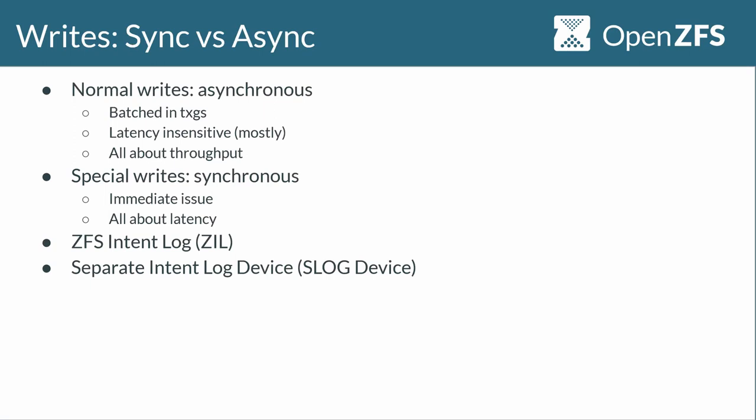Normal writes when you're dealing with software are what you would think of as asynchronous writes. You tell the file system you'd like to write this data to this file at this offset, and then the file system will go off and write that data at some point in the future. There are no guarantees about when that data will actually be stored on disk. In ZFS we batch these asynchronous writes into something called transaction groups, or txgs, in order to improve performance and efficiency.